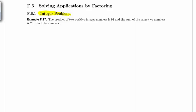The first example states the product of two positive integer numbers is 91 and the sum of the same two numbers is 20. So let's first talk about the phrase positive integer numbers.